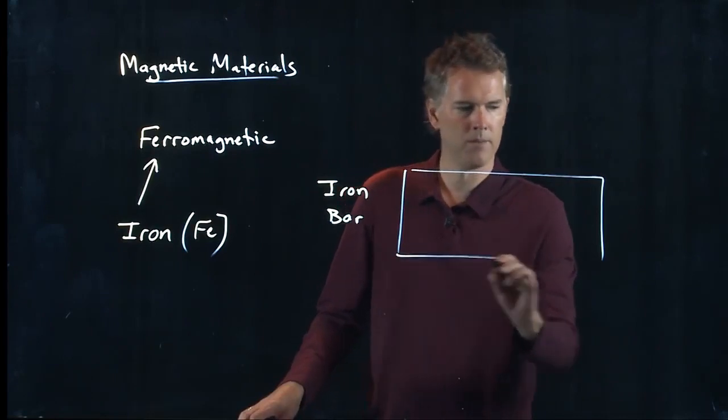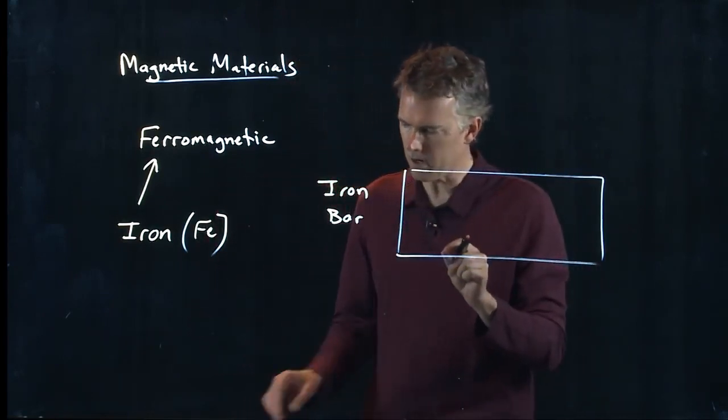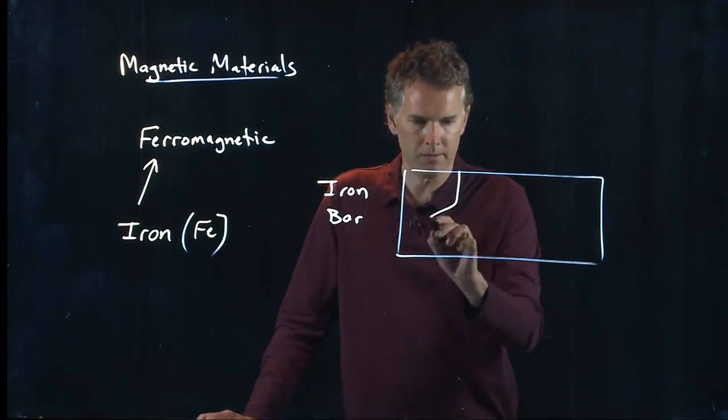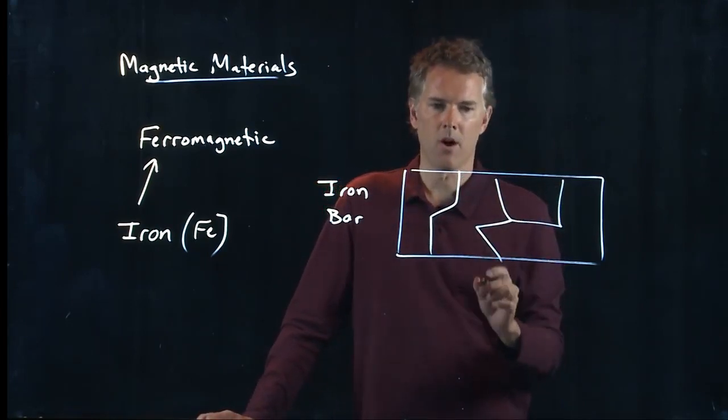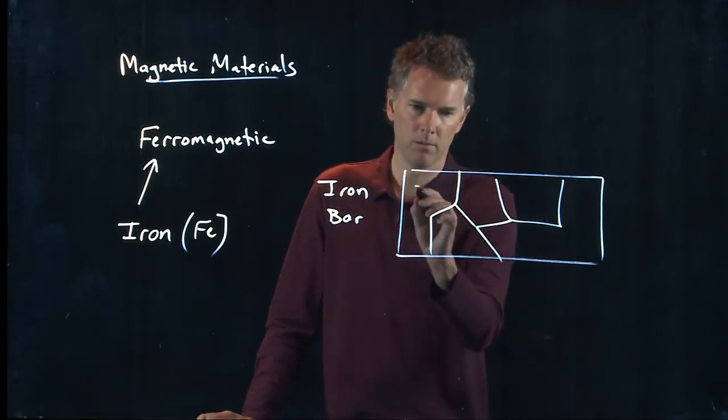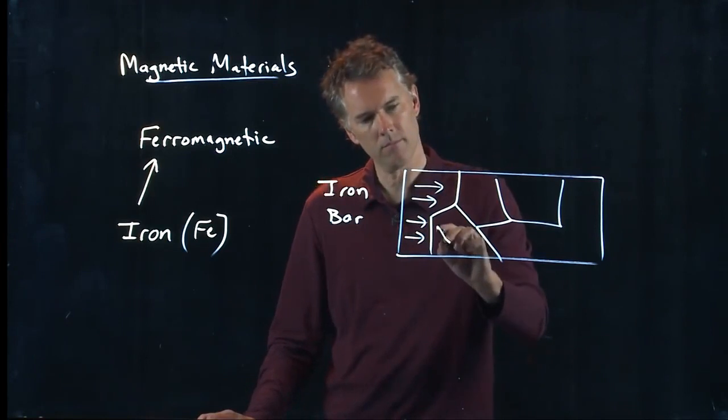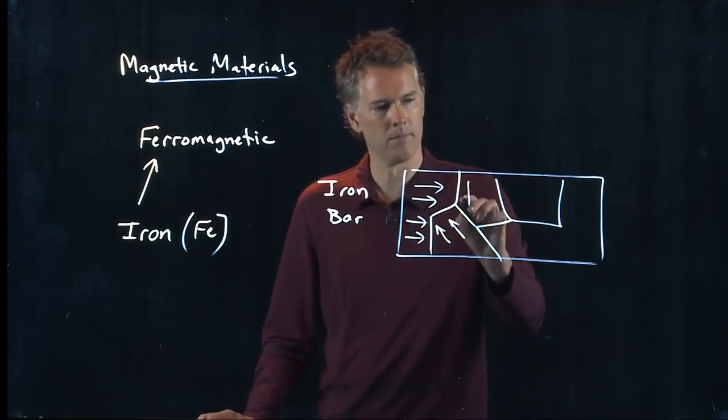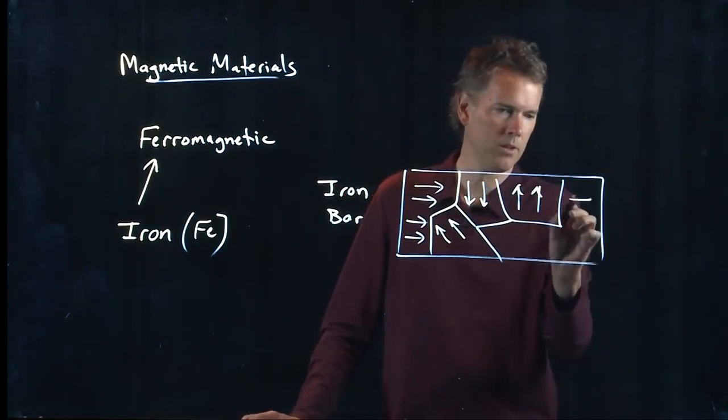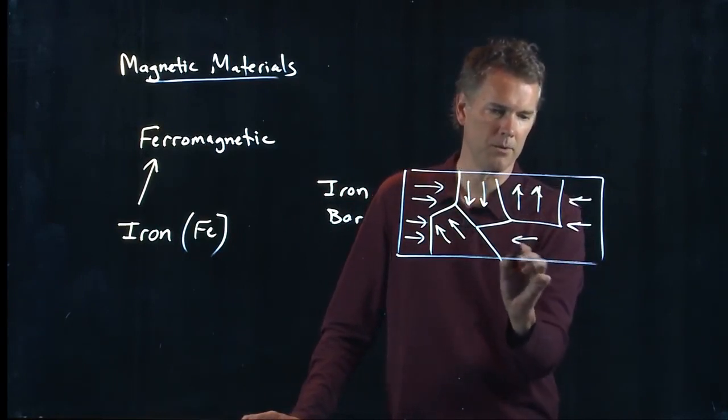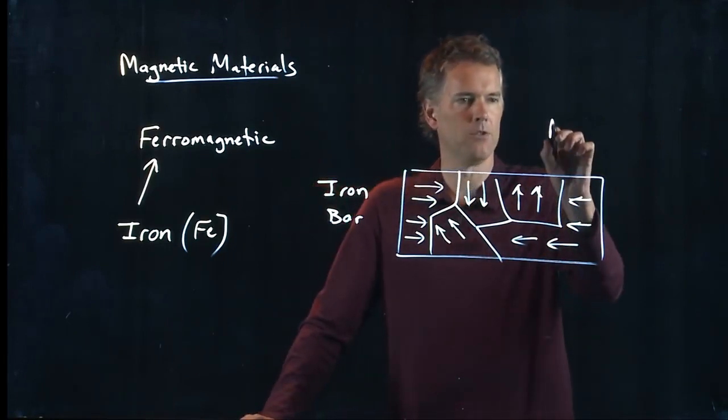And I think about the little magnetic dipoles that are in there, what do I see? I see the following: there are domains where all the magnetic dipoles line up, and as I go from one domain to the next they are scrambled. These are the magnetic domains.